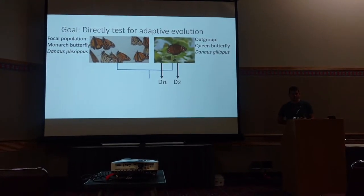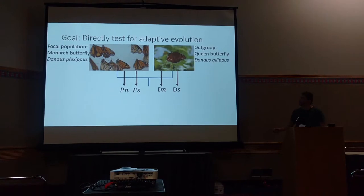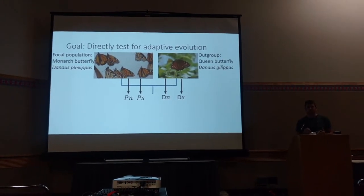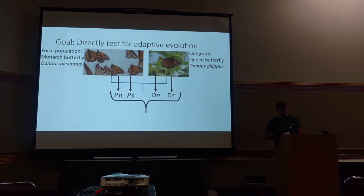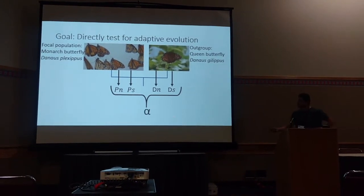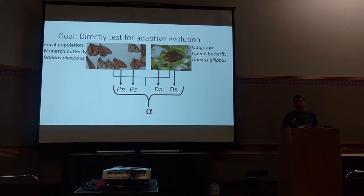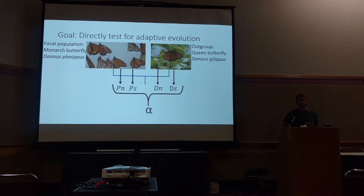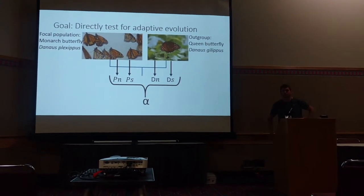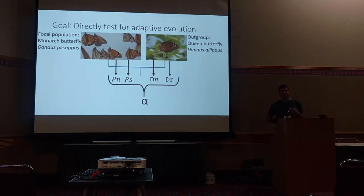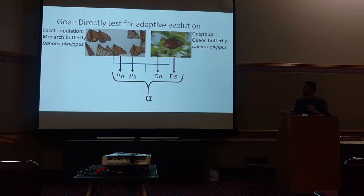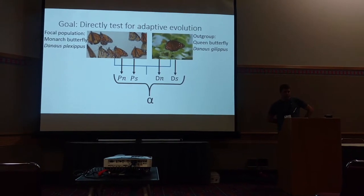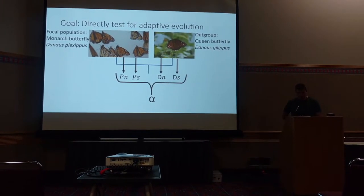Divergence alone isn't really going to tell us much about selection — we also need the other half of the equation: within-species variation, to look at the rate at which variation is converted into fixed differences between species. We can crunch all this down into the alpha statistic, which is an estimate of the proportion of substitutions fixed due to positive selection. A higher alpha means a greater proportion of fixed differences are due to selection. There's a lot of bioinformatics under the hood, but we'll skip to the results.